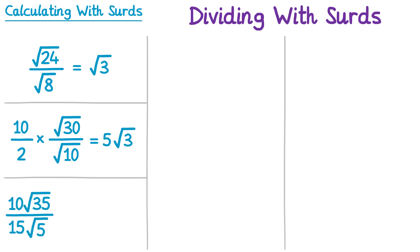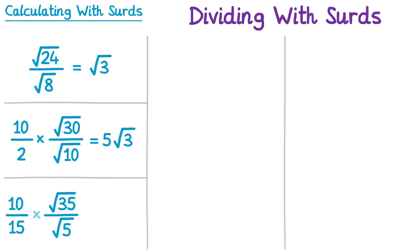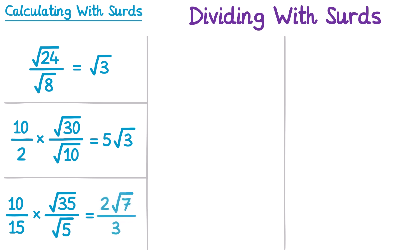Now let's try another division. Splitting into two fractions, we look at 10 over 15 — that doesn't give an integer, but we can simplify that fraction by dividing top and bottom by 5, giving 2 thirds. Then the square root of 35 over the square root of 5 is the square root of 7. You can leave the answer as this, or write it alternatively as 2 root 7 over 3.